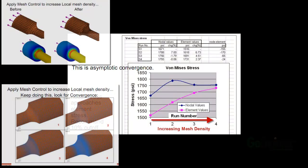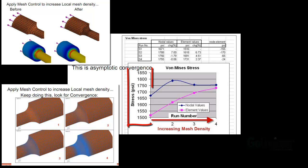Here is a graph showing asymptotic convergence. This behavior is common with models that have smooth fillets and no jagged interior corners. Stress values are on the vertical axis. Run cases are on the horizontal axis. Moving to the right represents increasing the mesh density on the model.